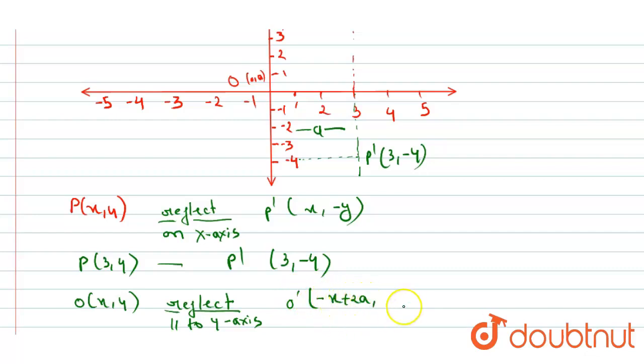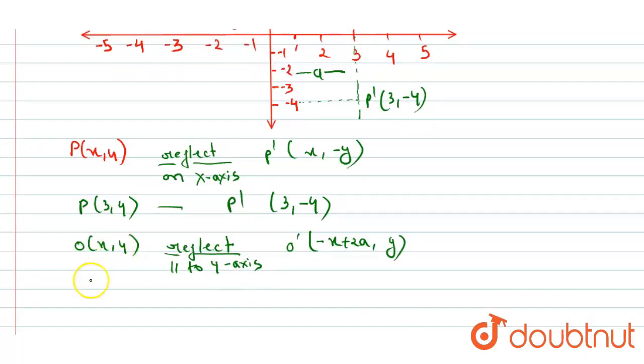Now we will solve the values. What is O? The coordinate of O is (0,0).